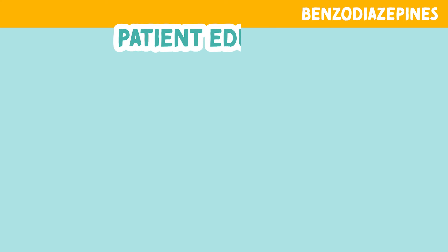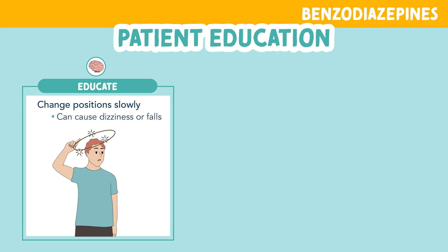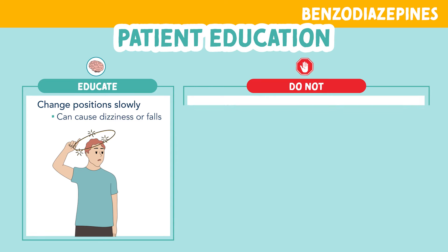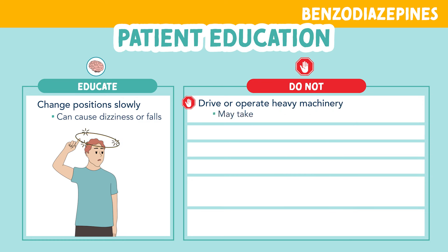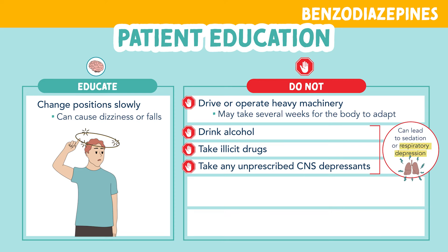Let's review some patient education. You need to educate your patient to change positions slowly, as benzodiazepines can cause dizziness or falls if you get up too quickly. You should also instruct your patient not to drive or operate heavy machinery until the body has adapted — this can take several weeks. You also want to educate them not to drink any alcohol, take illicit drugs, or any unprescribed CNS depressants, as this can lead to sedation or even respiratory depression.